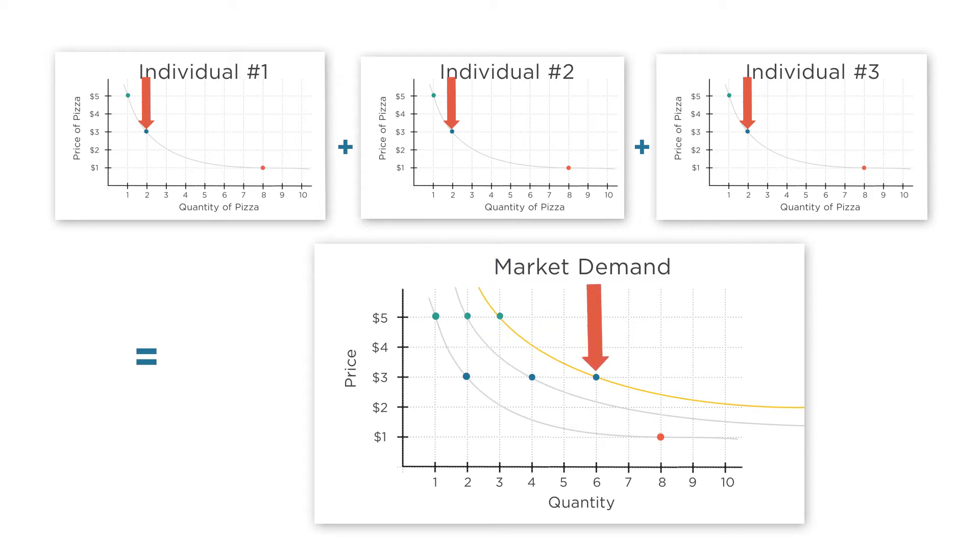And so on for the other possible prices. Graphically, aggregating individual demand curves to market demand curves consists of summing the individual demand curves horizontally to produce the market demand curve.